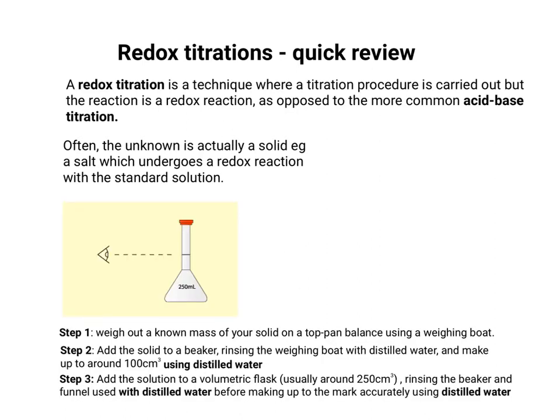Add your solution to a volumetric flask, usually around 250 cm³, rinsing your beaker and the funnel used with distilled water all the while to ensure no loss of material. Then make it up to the mark accurately using distilled water — you can use your eye at the level of the meniscus, as the diagram shows, to check your accuracy.